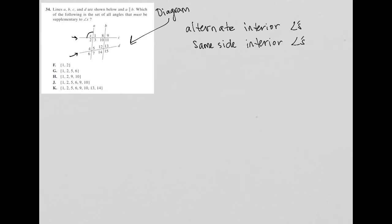Same side interior angles, corresponding angles, right? Hopefully this is ringing a bell with some things you learned in geometry. These are the types of things that we find whenever we have two parallel lines intersected by a transversal.